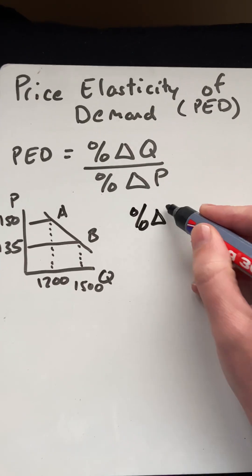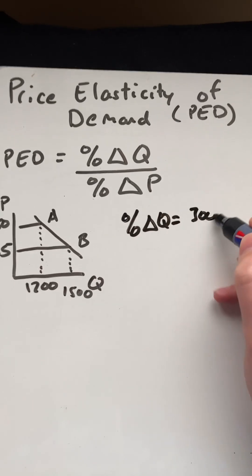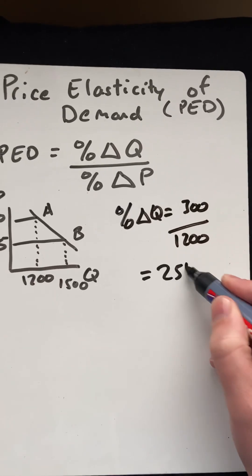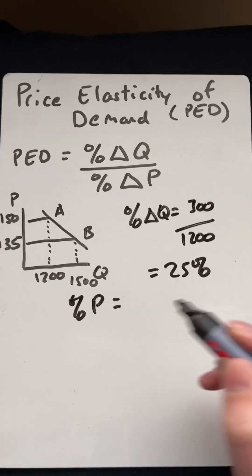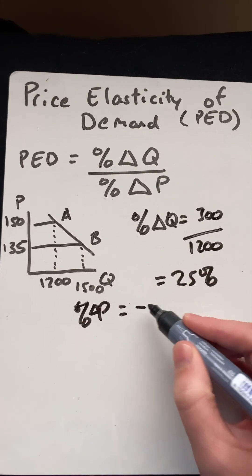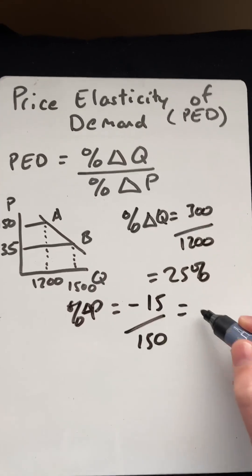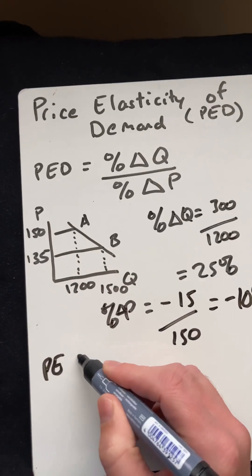Let's first work out the percentage change in quantity, which is a change of 300 over the original 1,200. So that is 25%. Percentage change in price is a drop from 150 to 135, so it goes down by 15 over the original 150. That is a drop of 10%.